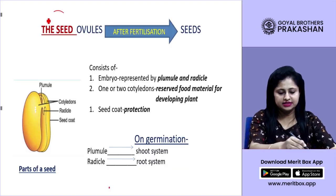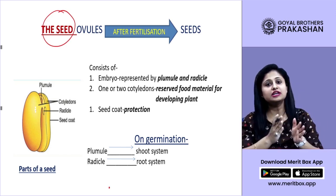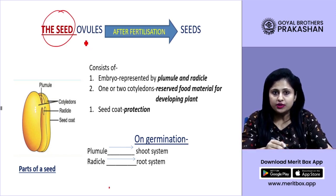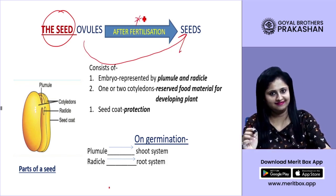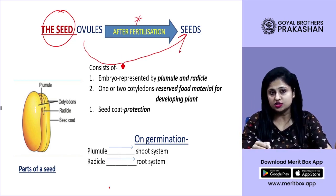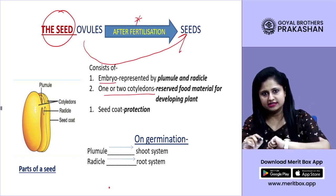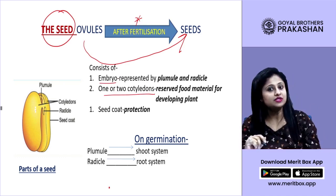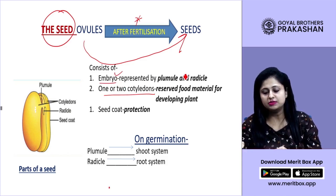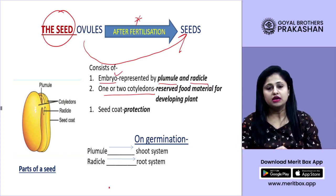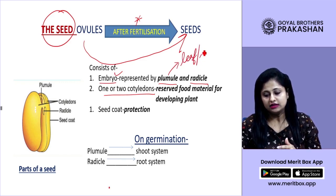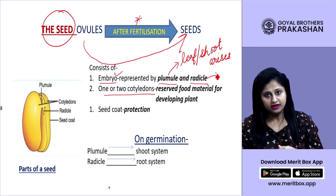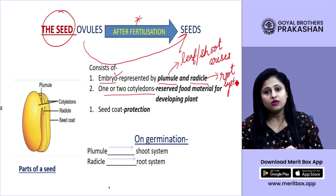After fertilization, the ovules are converted into seeds. A seed consists of embryo and one or two cotyledons depending on the species. An embryo is represented by plumule and radicle. The plumule is the part of the embryo from where the leaf or shoot system arises, and the radicle is the part from where the root system arises.